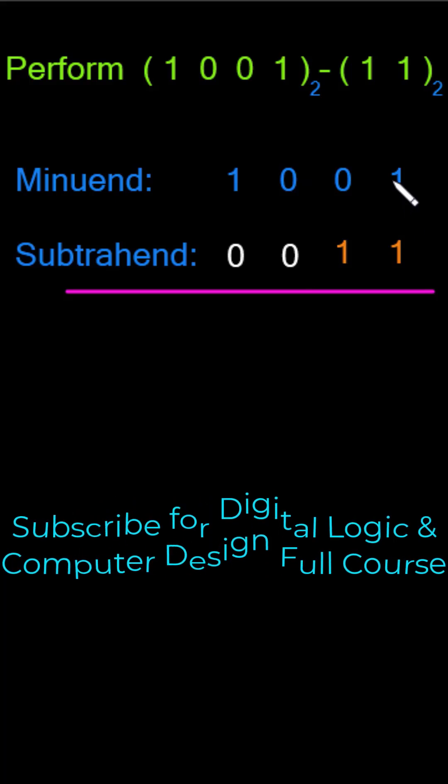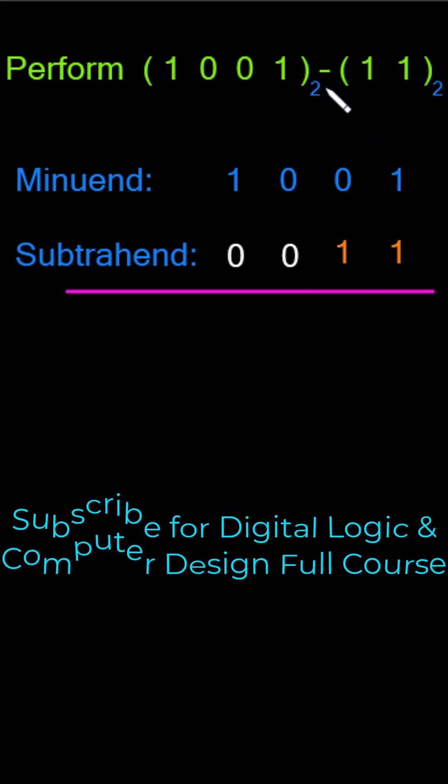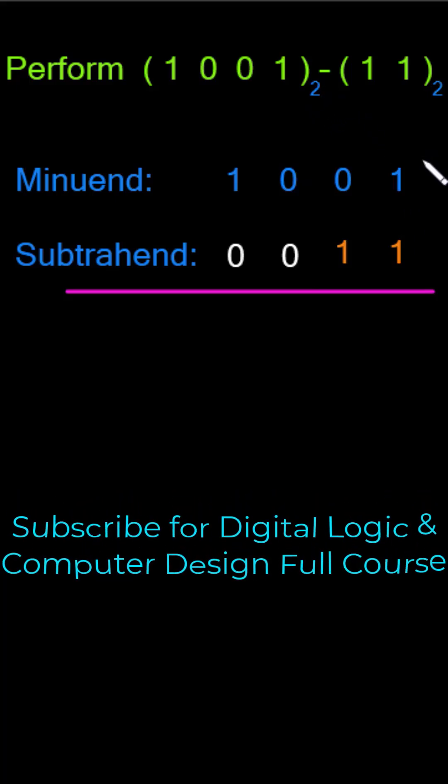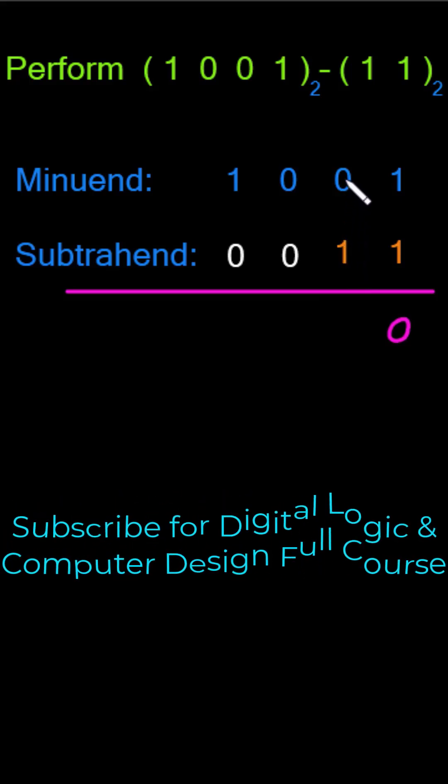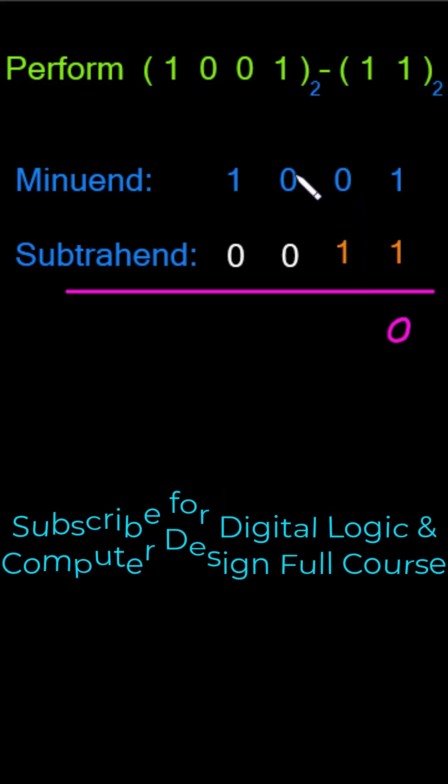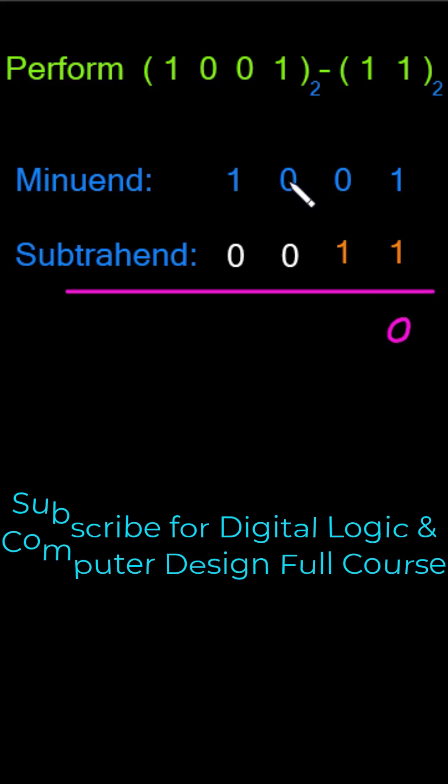In the present column we have 1 minus 1, that's equal to 0. Now we have 0 minus 1, which can't be done. That is why I have to go to the next column and borrow one. But I can't do that, that is why I have to go to the next column.